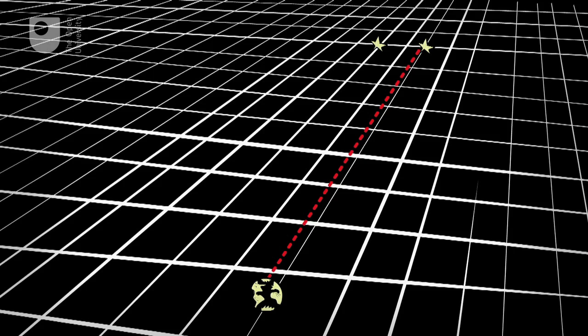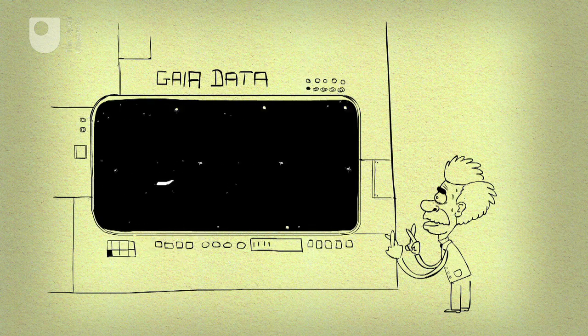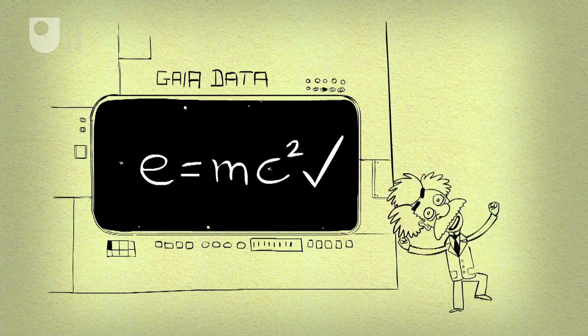And if that's not impressive enough, by measuring the bending of starlight by the Sun's gravitational field, it will be able to test Einstein's theory of general relativity.